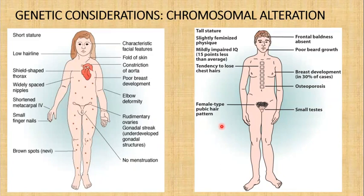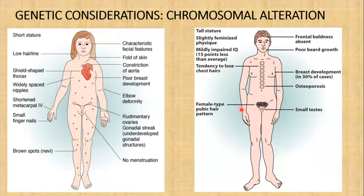To your right is a male with an extra X chromosome, which is seen in Klinefelter's syndrome. Here you notice more of a feminized physique, poor beard growth, small testes, risk for osteoporosis, gynecomastia, and a female-type pubic hair pattern. These are genetic concentrations related to chromosomal alterations.